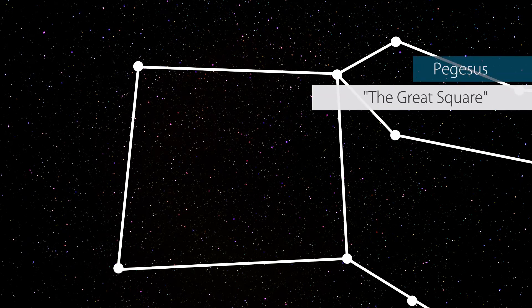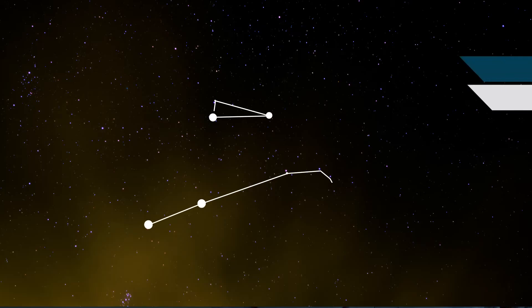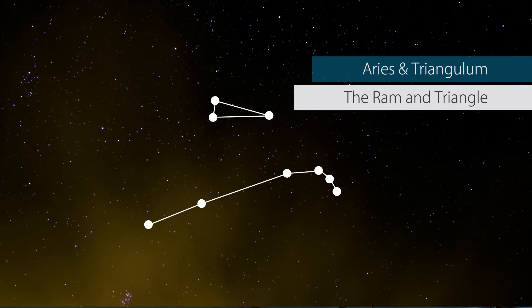Then through the rest of the year you have a procession of constellations that move from the eastern horizon to the western horizon.